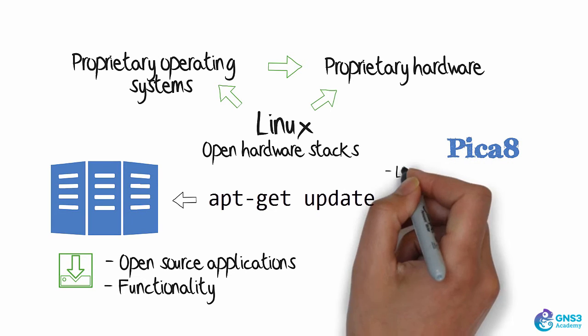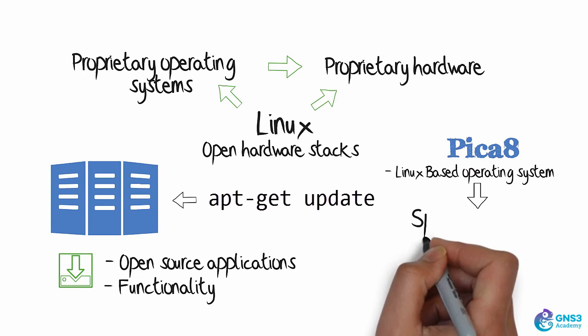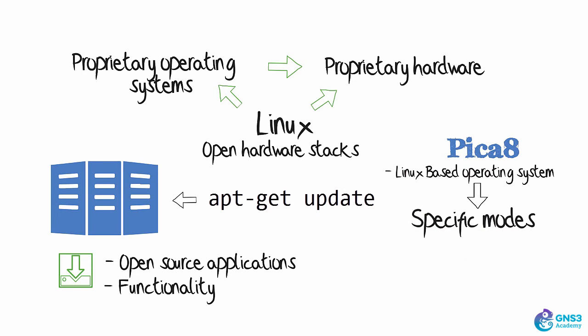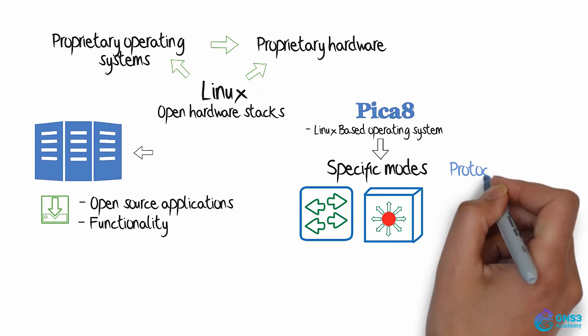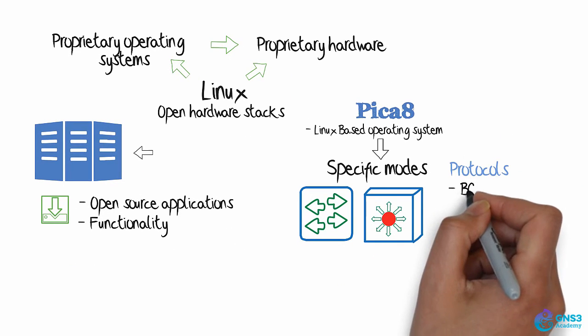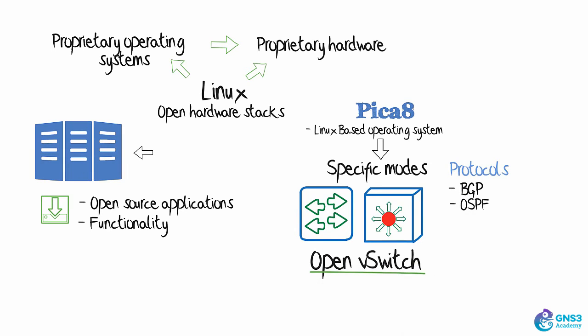Pika 8 allows you to run a Linux-based operating system in two specific modes: either as a layer 2, layer 3 switch using protocols such as BGP, OSPF, and others in a data center, or in open vSwitch mode where you can integrate your switches with OpenFlow controllers.